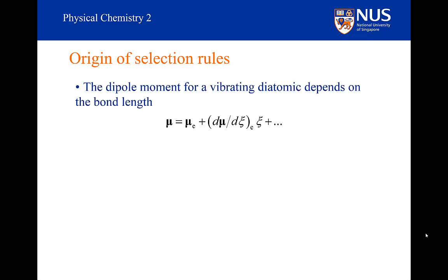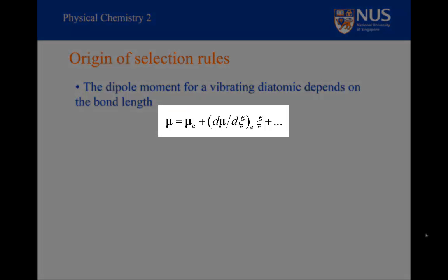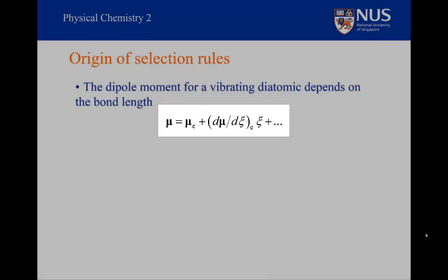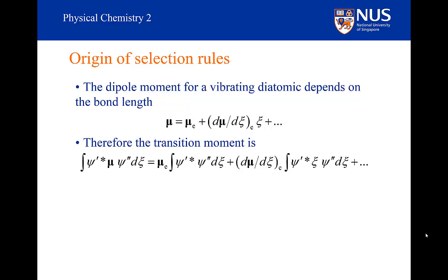The thing that we notice about the dipole moment is that it changes with bond length. Remember, dipole moment is just charge times distance, so it is going to change as bond length changes during the vibration. We could expand the dipole moment around the equilibrium position as a function of the displacement — essentially, expand it as a Taylor series as we did before. The mu sub e is the dipole moment at the equilibrium position and so it is a constant, which I can take out of the first integral on the right as it cannot affect the wave function.